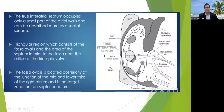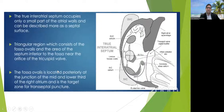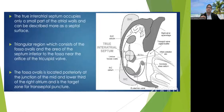The inter-atrial septum occupies only a small part of the atrial wall and can be described as a triangular septal surface consisting of the fossa ovalis and the area inferior to the fossa near the tricuspid valve orifice. The fossa is located posteriorly at the junction of the mid and lower third of the right atrium and is the target for transeptal puncture. This posterior inferior area is the place where we encounter only one layer, septum primum. It should be away from the coronary sinus os; in RAO, a slight clockwise movement of the needle moves it away from the CS.